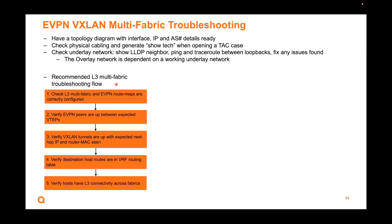The recommended Layer 3 multi-fabric troubleshooting flow is: first, make sure the configs are correct — most errors are config-related and that's why peers don't come up. Reference the sample configs we have. Then check your peers to make sure they're up for the control plane. After the control plane is up, check the data plane tunnels. For Layer 3, expect the next-hop IP and router MAC, because we're using symmetric IRB and L3VNI — that's where the router MAC is important. Then check host routes in the VRF routing table, and from the host perspective make sure they can connect on different subnets across the fabrics.